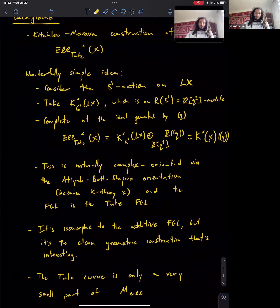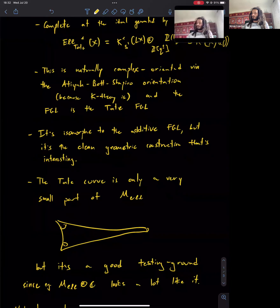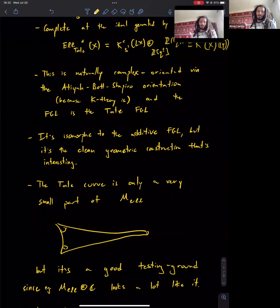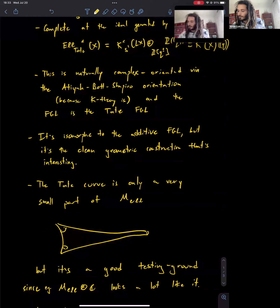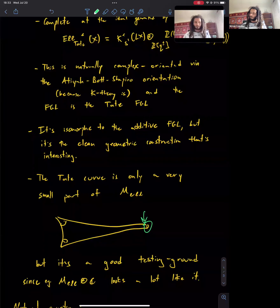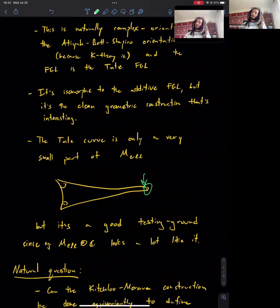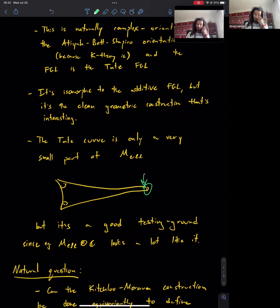The bad part is that the Tate curve is only a very small part of the moduli of elliptic curves—it's like a neighborhood of the point at infinity if you're looking at the J-invariant. So in terms of TMF or something, you're not doing much; you're only looking at a very small part of the moduli. But this part of the moduli is a good representative for the complex moduli, as it has a very similar sort of uniformization.